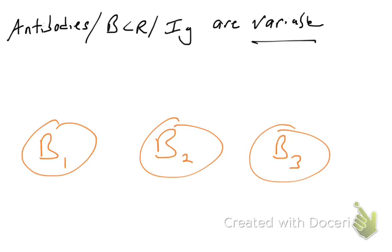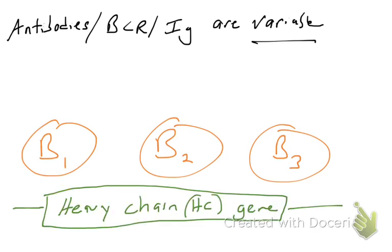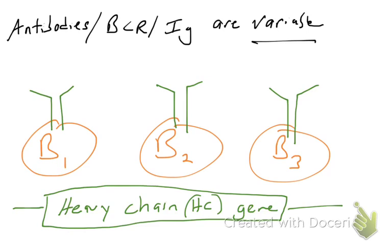Immunoglobulins are variable. Proteins — immunoglobulins, B cell receptor antibodies — are made from protein chains: heavy chains and light chains. The heavy chain protein must come from a gene. There's a heavy chain gene, and when it's transcribed and translated, it will make heavy chain proteins. Here are three B cells — each of them expresses the heavy chain gene and each is going to make a heavy chain protein.